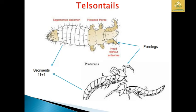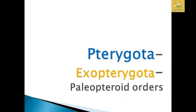In the picture you can see the segmented abdomen, the hexapod thorax, the forelegs, and the segment classification where they have 11 plus 1 and the 12th is known as the telson in Protura. After that we are going to see Pterygota, Exopterygota, as well as the Palaeoptera orders.